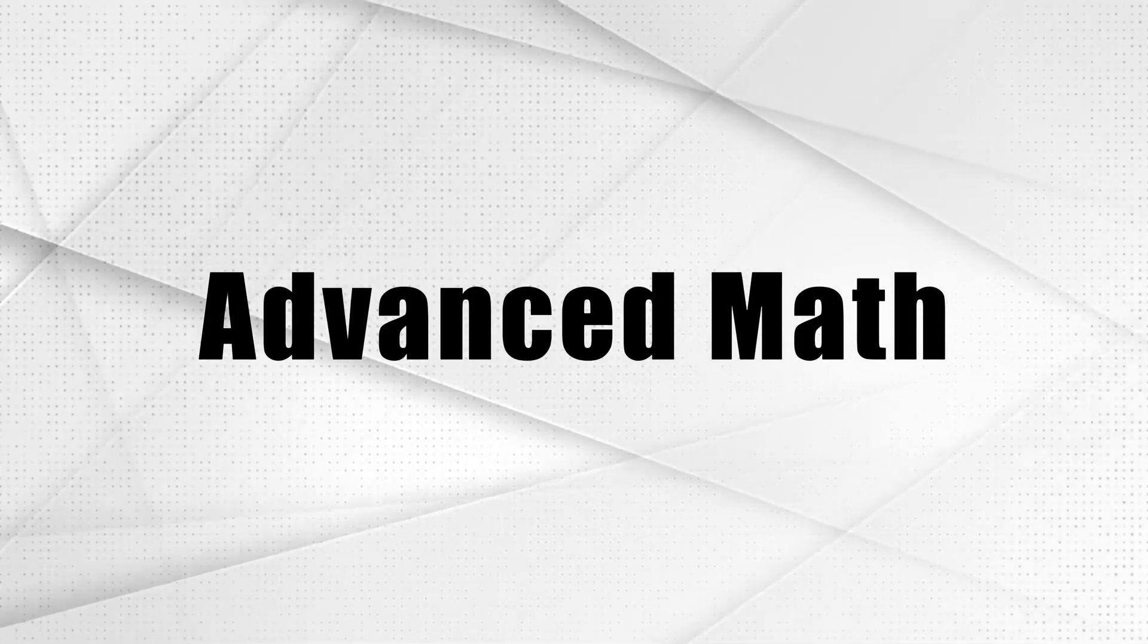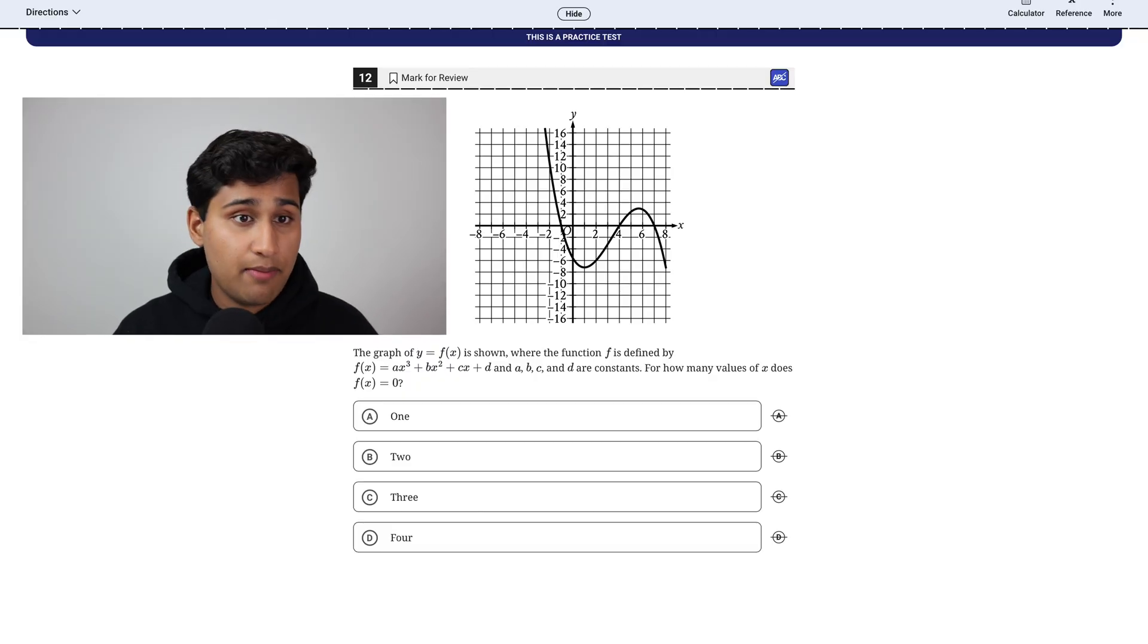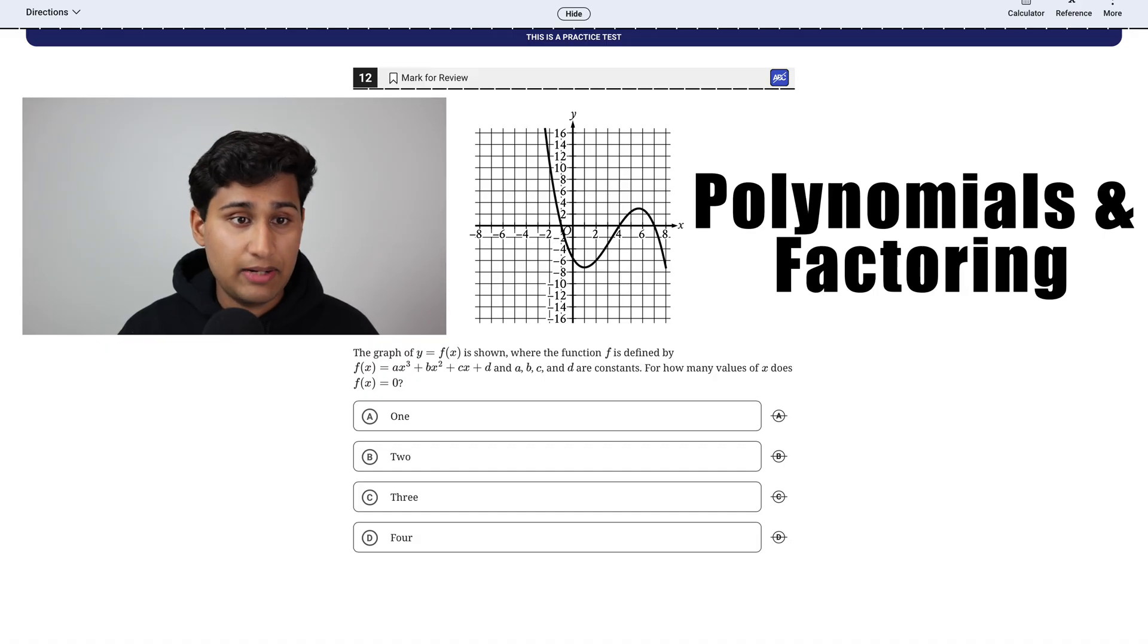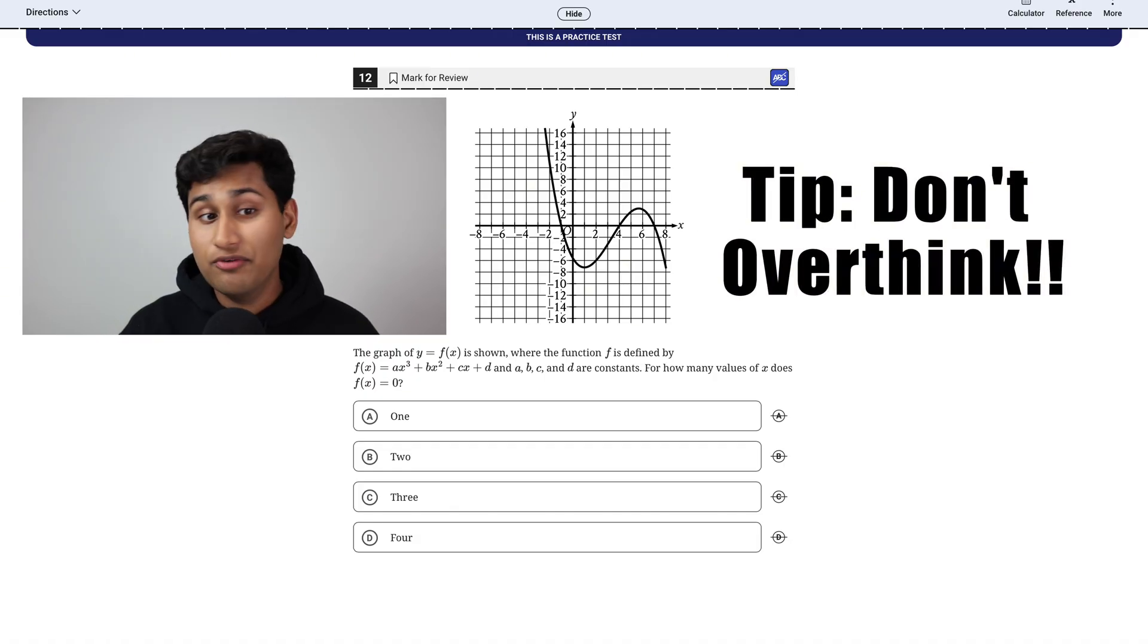So the next main category in the SAT math is what I like to call advanced math. So for example, this problem is polynomials and factoring. And my tip for this one is to not overthink it. These are very simple to answer.